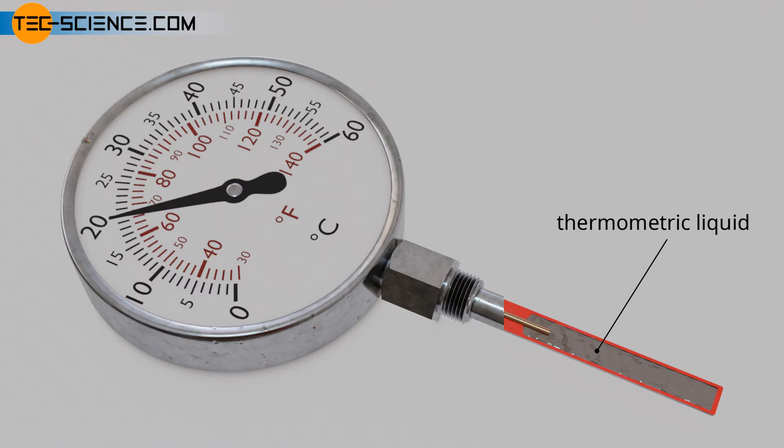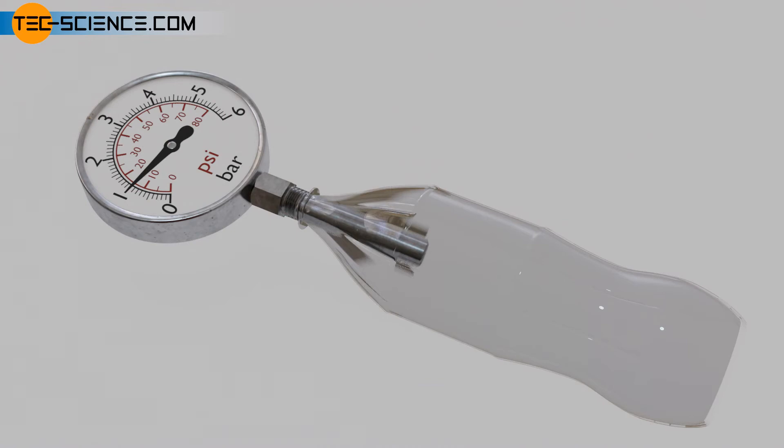The principle of liquid-filled thermometers can be demonstrated with a filled plastic bottle sealed with a pressure gauge. If the water inside heats up, it is tempted to expand. However, since the water completely occupies the volume of the bottle, and it is therefore almost impossible for it to expand, the pressure in the bottle rises very sharply.